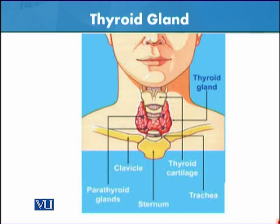This is the diagram through which we can understand the thyroid. This is the sound box, and this is the red region — this part. It is deeply notched, as I mentioned.